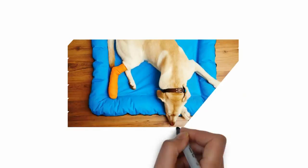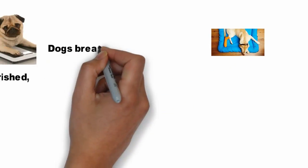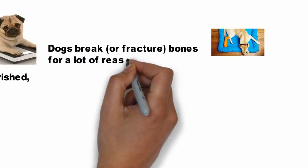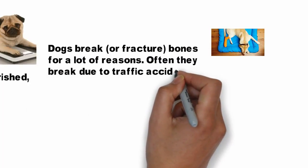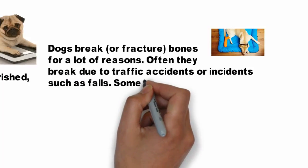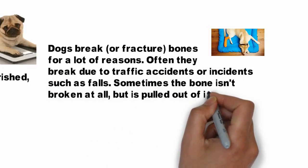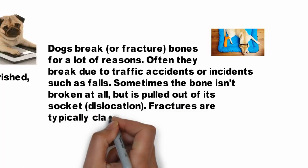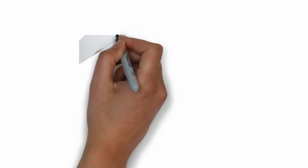3. Broken Bones. Dogs break or fracture bones for a lot of reasons. Often they break due to traffic accidents or incidents such as falls. Sometimes the bone isn't broken at all but is pulled out of its socket — dislocation. Fractures are typically classified as either open or closed.